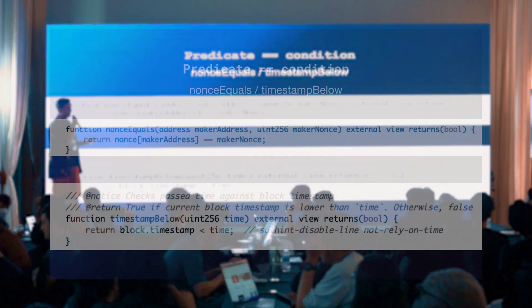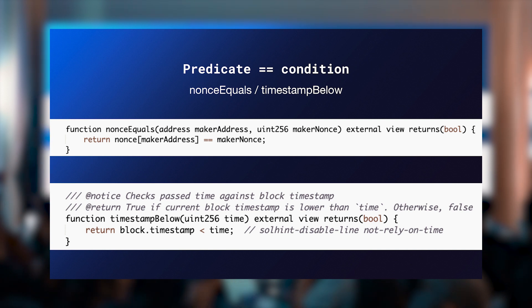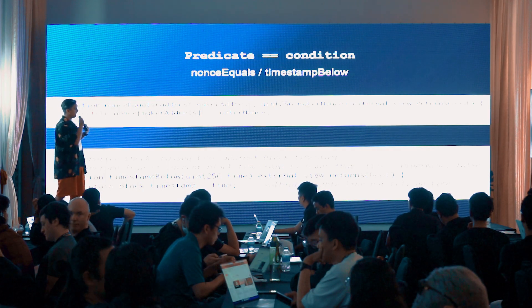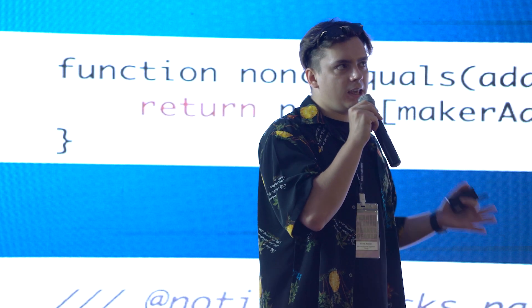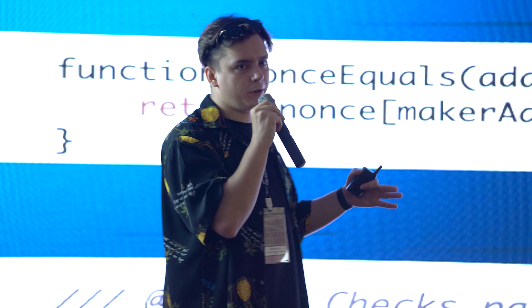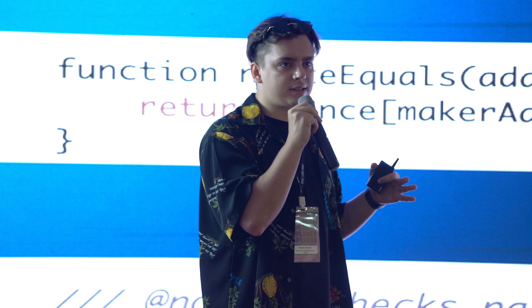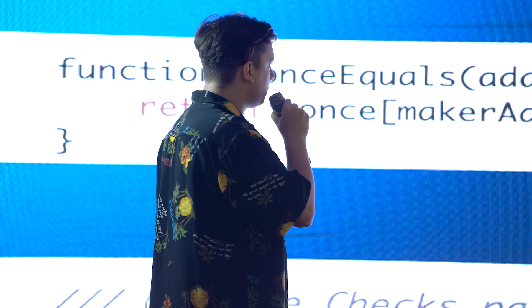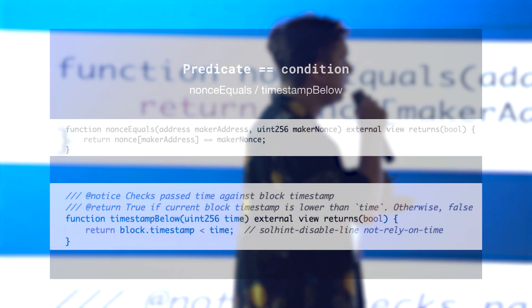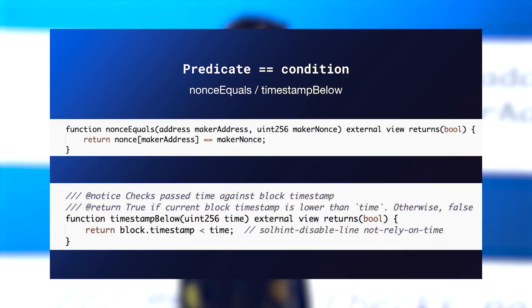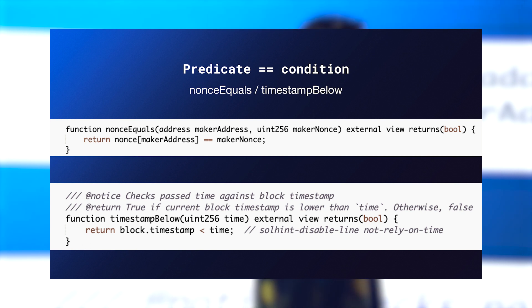Let's talk more about predicate — it's a pretty awesome feature that makes limit orders not only a limit order, but more like arbitrary, gasless trading execution. We allow you to build any custom predicate on our limit order. For example, you can make a predicate that says: if the DAI price goes below 1,000, I don't want to execute my trade. You just need to implement it at the smart contract level. There are also default predicates, like executing trades only during a specific timestamp window using the timestamp-below condition.